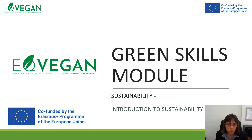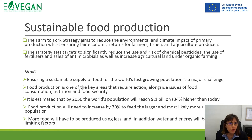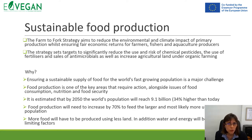Green skills module: introduction to sustainability for sustainable food production. When we discuss about sustainability, it's really important to think about a farm-to-farm strategy and the aim to reduce environmental and climate impact. The strategy targets significantly reducing the use and risk of pesticides and also reducing the use of fertilizers. It's important to ensure sustainability and also the supply of food for the world's fast-growing population.